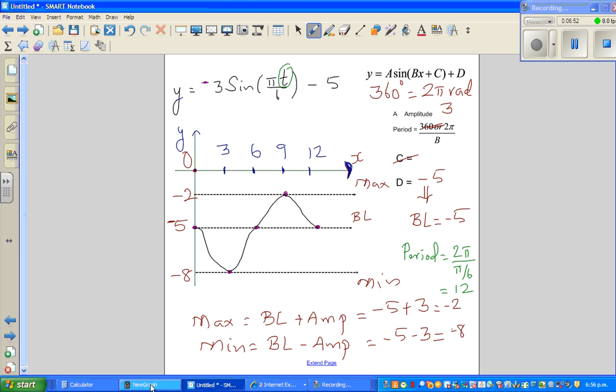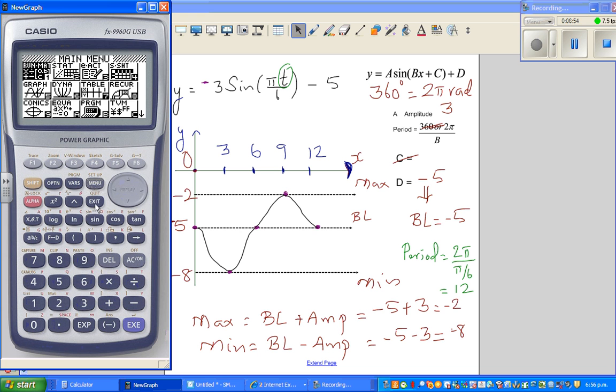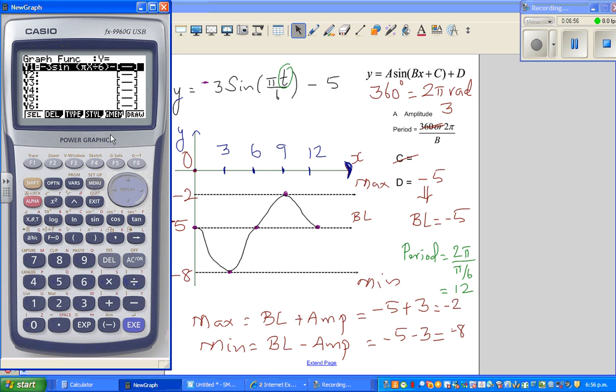We need to check this on a calculator. The first thing I'll do is go to graph and type in the equation. Let me delete it and type in again. So minus 3 sine bracket, you go shift pi x. T is same as x, the variable is t there. Divide by 6, minus 5.